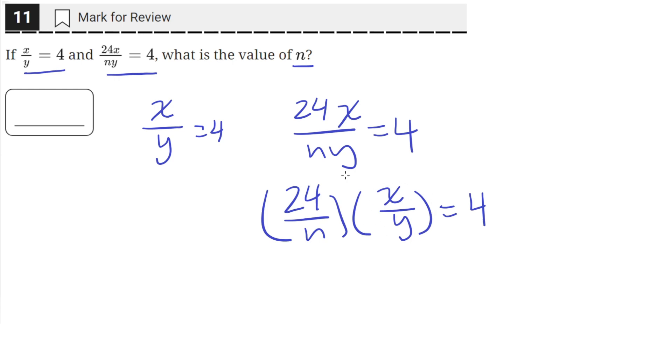Now this x over y, the first equation tells us that x over y is equal to 4. So let's substitute that in. So now we'll be left with 24 over n times 4 is equal to 4. x over y is just 4.